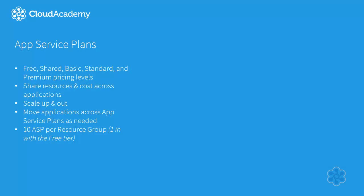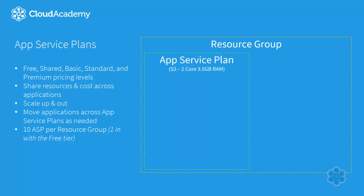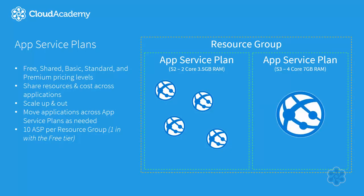To understand this further, consider a scenario. Start with a resource group in your Azure subscription. Within, you can deploy one or more app service plans, and within your app service plan, you can deploy one or more apps. In this scenario, we're allocating two cores and three and a half gigs of RAM to four separate applications. In the other app service plan, we're providing one single application with double the resources, as we mentioned in the first app service plan.